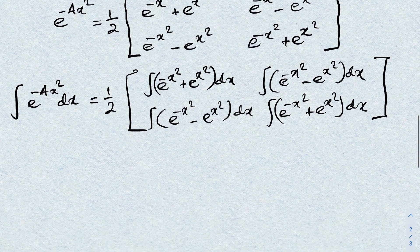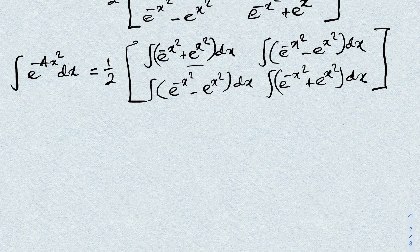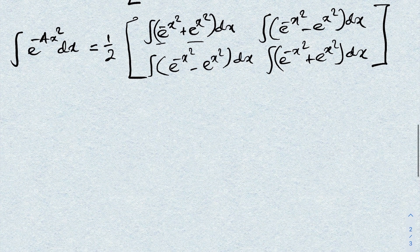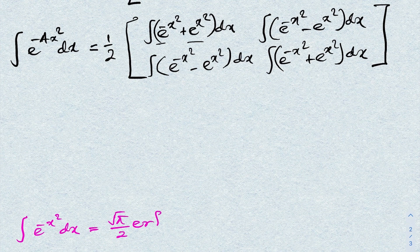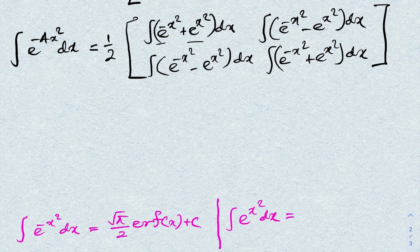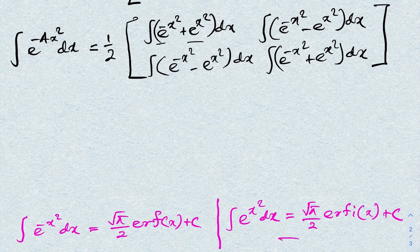We need to integrate e^(-x²) and e^(x²). We know the integral of e^(-x²) dx equals (√π/2) erf(x) + C using the error function. In a previous video I evaluated the integral of e^(x²) dx, which equals (√π/2) erfi(x) + C, using the imaginary error function. I'll leave the link to that integral in the description.